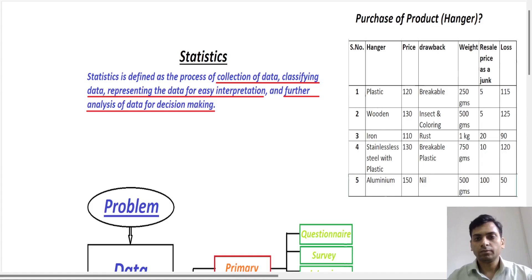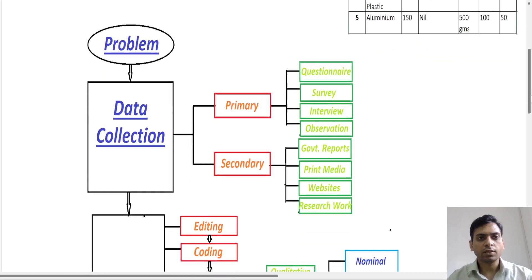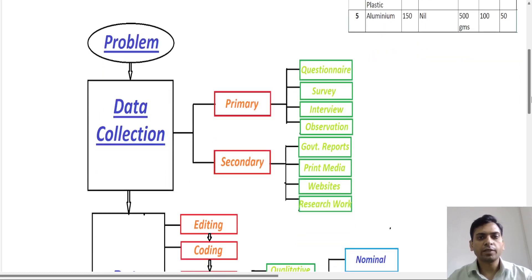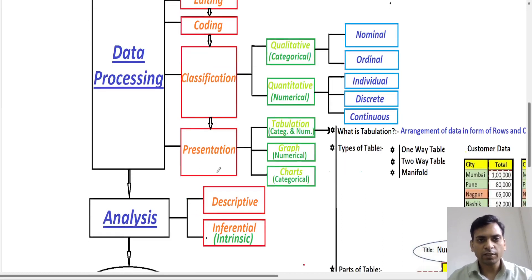Hello everyone. As we are studying statistical process, the second step is data processing. In my previous lecture I explained this statistical process: the first step is data collection using two methods — primary and secondary. Then we have data processing, which includes editing, coding, and data classification. Today's focus is on data presentation.